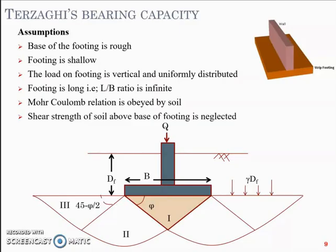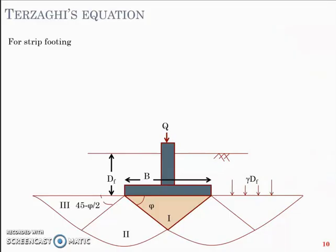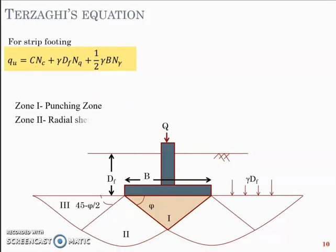The shear strength of the soil above the base of the footing is neglected, which means the failure line will end at the foundation level. The shear strength of the soil above the foundation or footing level is neglected and does not extend to the ground level. These are assumptions put forth by Terzaghi to arrive at an equation for strip footing. Now the equation is: qu (ultimate bearing capacity) is equal to c Nc plus γ Df Nq plus half γ B Nγ. This is a very important equation and you'll have to understand it and memorize it. Zone one is called the punching zone, zone two is a zone of radial shear, and zone three is the passive zone.